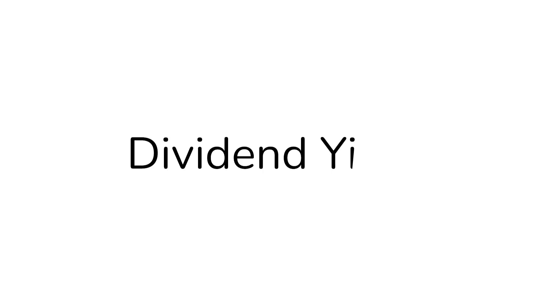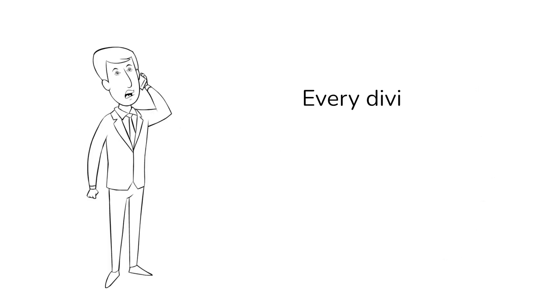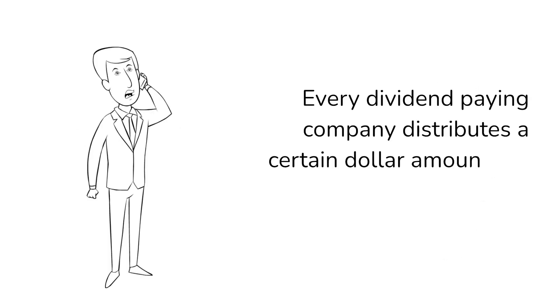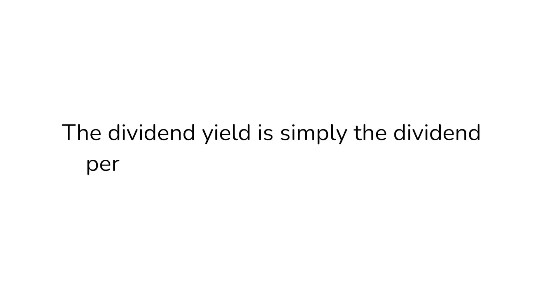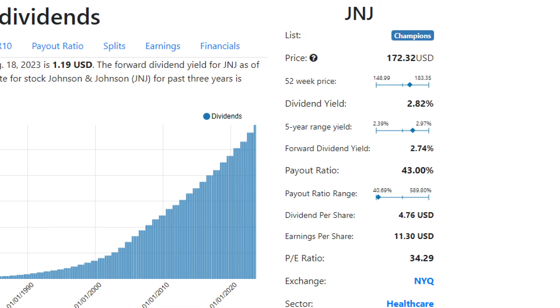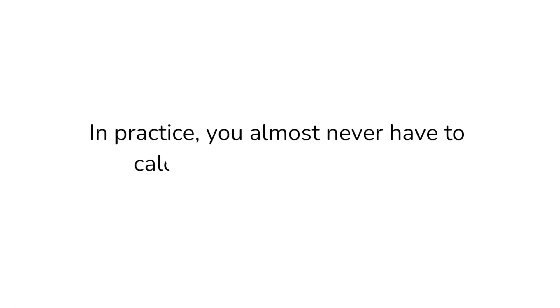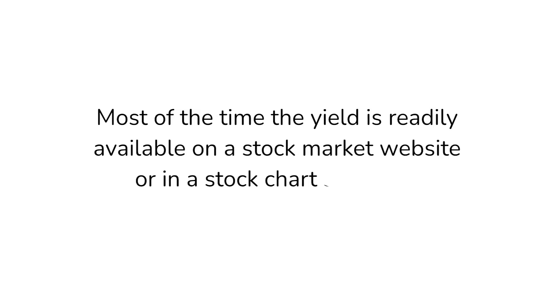Dividend yield is the return on your investment in the form of dividends. Every dividend-paying company distributes a certain dollar amount per share owned. The dividend yield is simply the dividend per share divided by the share price. Dividend yield can fluctuate based on the current share price. Perpetual dividend raisers increase their dividend per share consistently year over year, but since the share price almost never increases proportionally to the dividend growth, the yield may rise or fall. In practice, you almost never have to calculate the dividend yield yourself, as most of the time the yield is readily available on a stock market website or in a stock chart software.